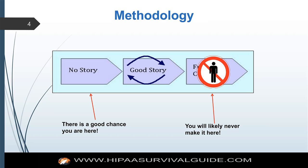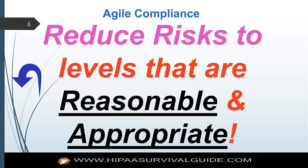We move from zero to 60 really, really fast using an agile methodology. You'll likely never get to a fully compliant status, and that's not the objective. What we are trying to do is reduce risk levels that are reasonable and appropriate.